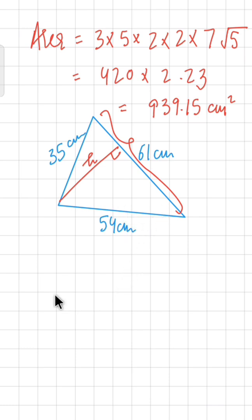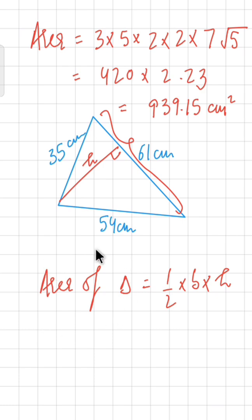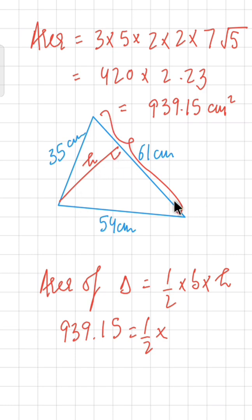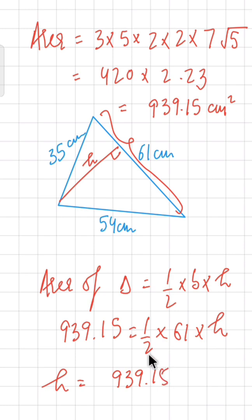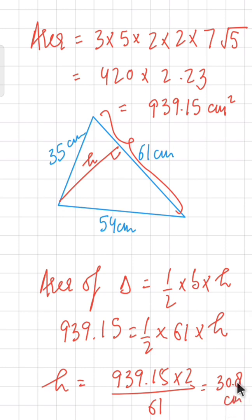We use the formula: Area = ½ × base × height. We already know the area is 939.15 cm². The base is 61 cm (the longest side). Rearranging: height = (2 × 939.15) ÷ 61. Simplifying this gives the smallest altitude h ≈ 30.8 centimeters.